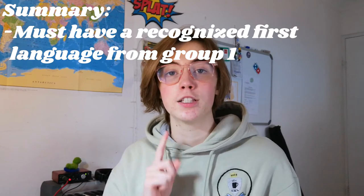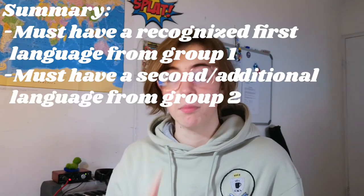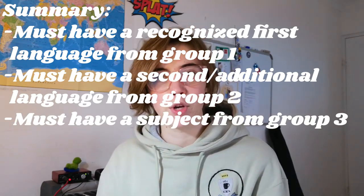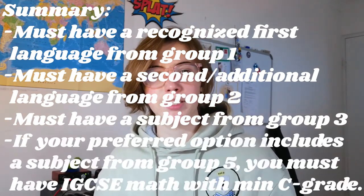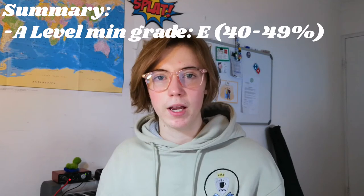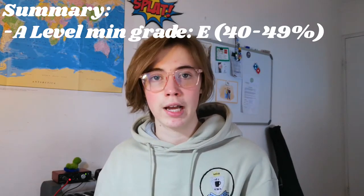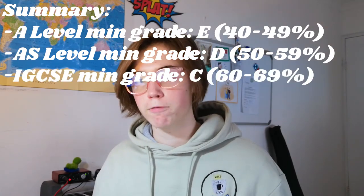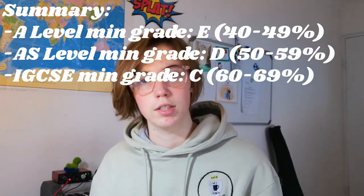In summary, you must have a recognised first language from group one, a second or additional language from group two, and a group three subject. If offering a subject from group five, you must have IG Mathematics with at least a C grade. The minimum grade for any A levels is an E (40–49%), for AS levels a D (50–59%), and for IG levels a C (60–69%). That summarises the USEF requirements needed to qualify for a certificate of exemption to apply to a South African university.